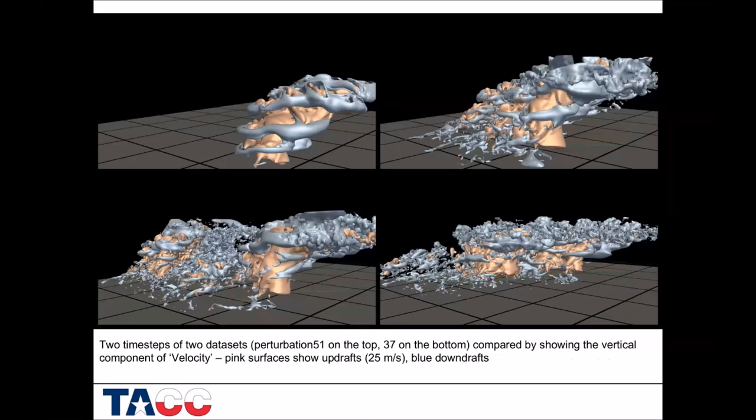Here's another set of fields — this is vertical velocity. The pink surface is very fast upward-moving air, and the blue is air moving down. The two storms are compared here — storm 37 on the bottom and storm 51 on the top. You can see how storm 37 is a much more chaotic, more turbulent storm. You can see this effect of the updraft pulling the air around in these big spiral forms.